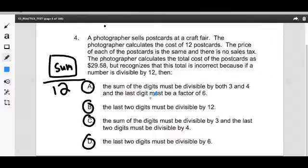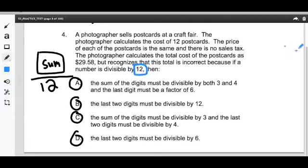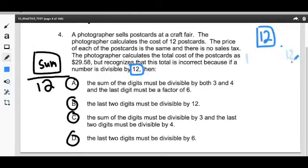Let's talk about the divisibility rules real quick. If a number is divisible by 12, a couple things have to be true. If it's divisible by 12, what are the factors of 12? Well, 1 and 12, 2 and 6, 3 and 4.